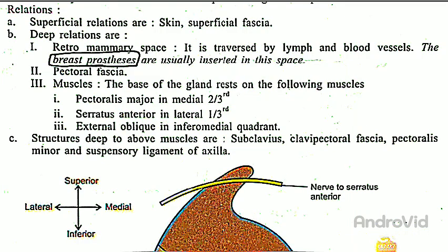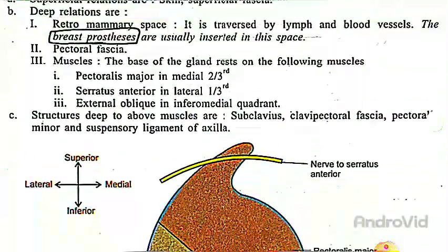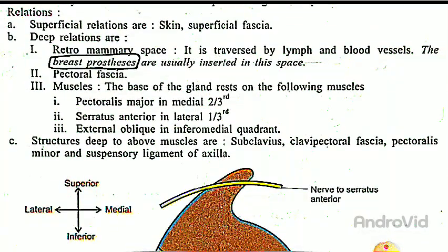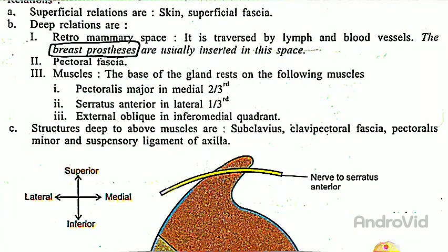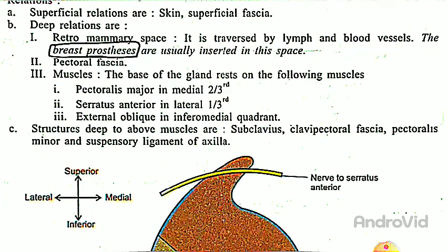Let us discuss the relations of the mammary gland. The superficial relations are skin and superficial fascia. Coming to the deep relations, the first one is the retromammary space, which is traversed by lymph and blood vessels. Breast prostheses are usually inserted in this space, and the pectoral fascia is also relevant here.